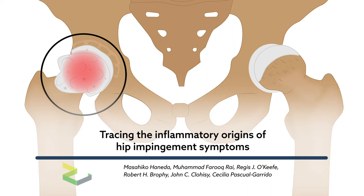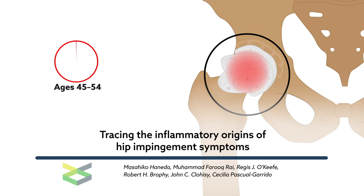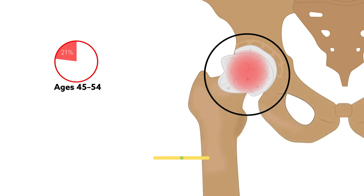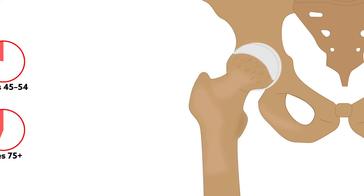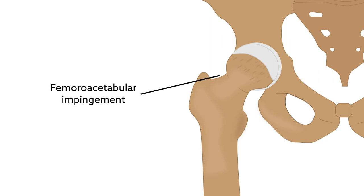Hip osteoarthritis is a degenerative and painful disorder. The disease affects an estimated 21% of the population between the ages of 45 and 54, and twice that fraction among people over 75. Nearly half of cases of hip osteoarthritis can be traced to femoroacetabular impingement, the growth of extra bone over the hip joint.